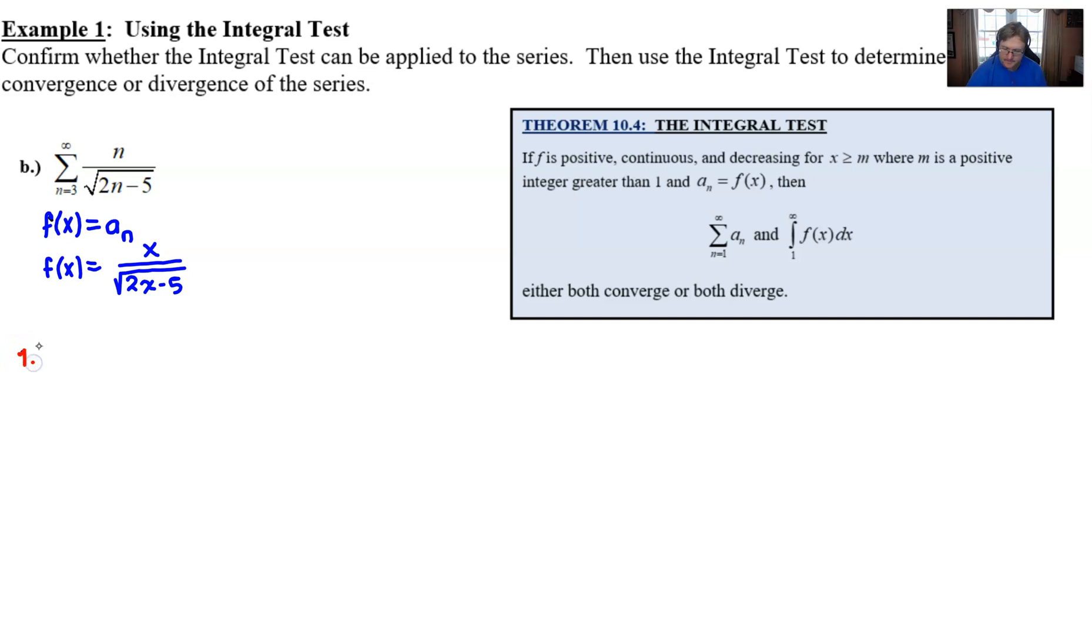Number one, is this function positive? Well, I feel pretty certain that f of x is positive. Now, wait a minute, aren't there some x values for which this could be negative? Well, okay, now let's think about this. If we let x be a negative number, yeah, maybe that numerator could be negative, but the denominator gets all crazy because it's going to be an imaginary number. But wait, n's got to start with 3. So for 3 and beyond, I'm very certain that f of x is positive. Let's just make sure that we state for what values that's happening. And in this case, it would be for x greater than or equal to 3.